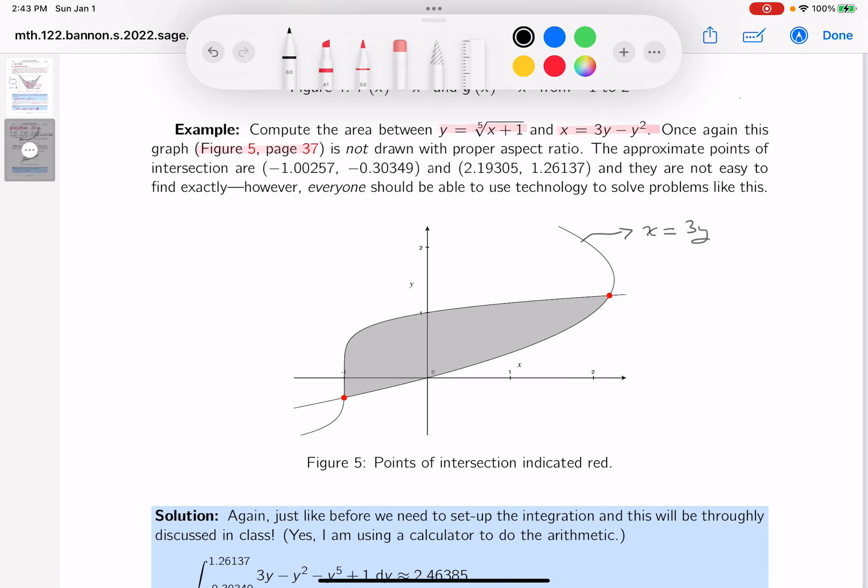What's 3y minus y squared, and this curve over here, that's going to be that fifth root, which is y equals the fifth root of x plus 1, all right?